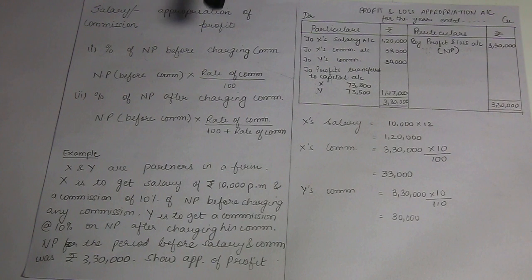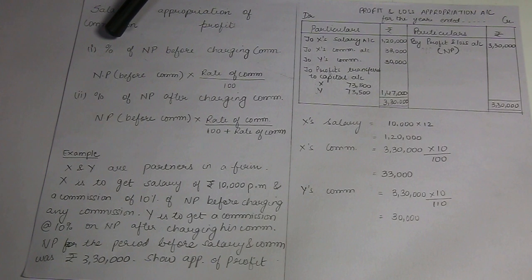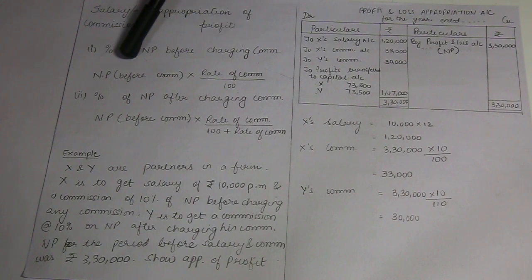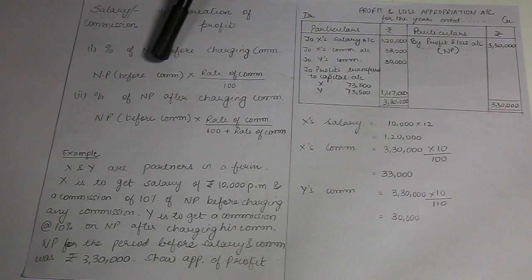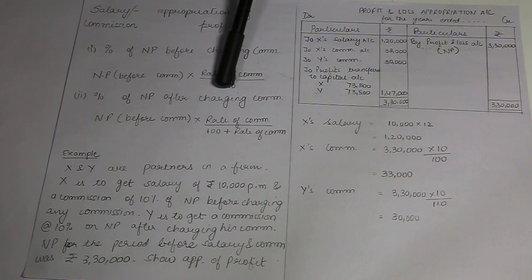Generally, commission is a percentage of sale, or a percentage of purchase, or a percentage of net profit. If the case is given as a percentage of net profit before charging such commission, then the net profit before charging such commission — which is received from the profit and loss account prepared just before the P&L appropriation account — we charge this amount of commission multiplied by rate of commission divided by 100.